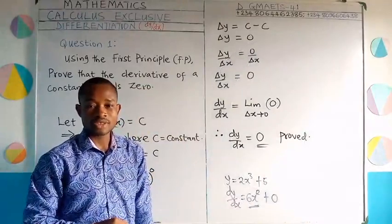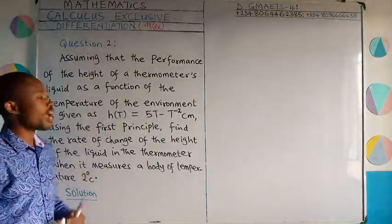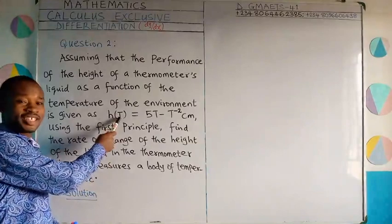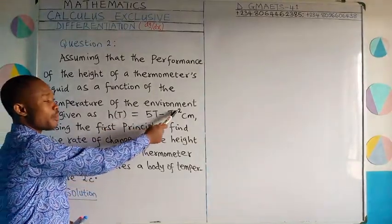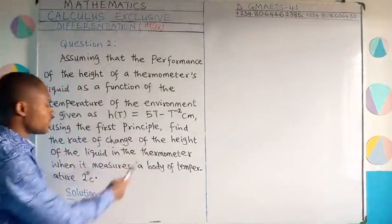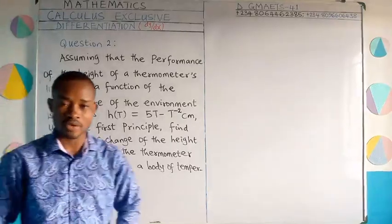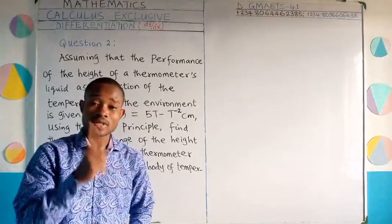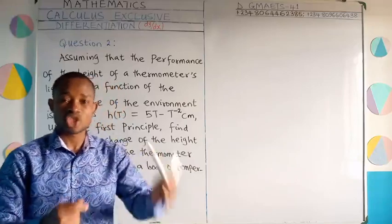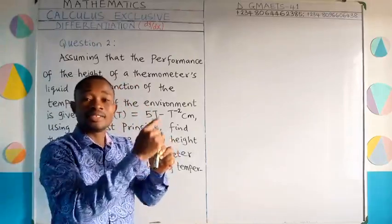Let us now get set for question number 2. The question reads: assuming that the performance of the height of the thermometer's liquid as a function of the temperature of the environment is given as h(t) equal to 5t minus t raised to the power minus 2 cm. Using the first principle, find the rate of change of the height of the liquid in the thermometer when it measures a body temperature of 2 degrees centigrade.